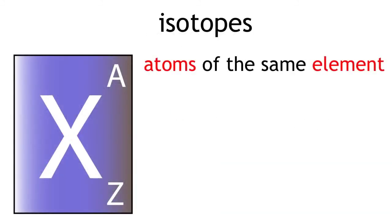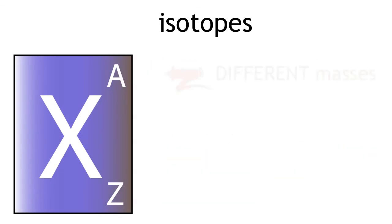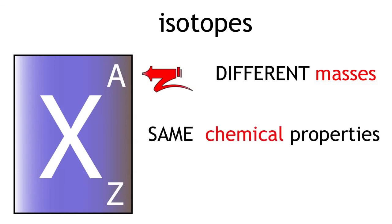So isotopes are atoms of the same element with the same number of protons but a different number of neutrons. They have different masses but their chemical properties are exactly the same.